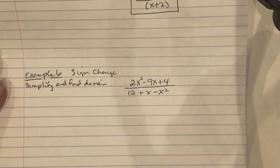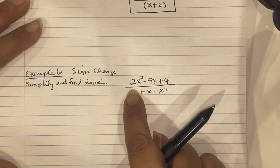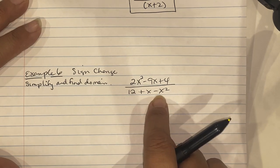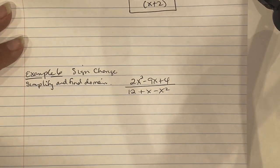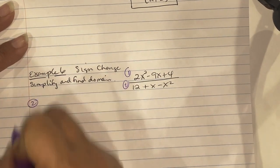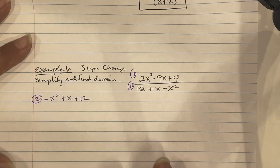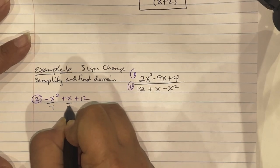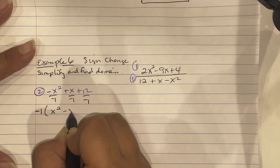On Example 6, they want us to do a sign change — simplify and find the domain. The problem is 2x squared minus 9x plus 4 divided by 12 plus x minus x squared. It's easier to factor when x squared is first, so rewrite the denominator as negative x squared plus x plus 12.